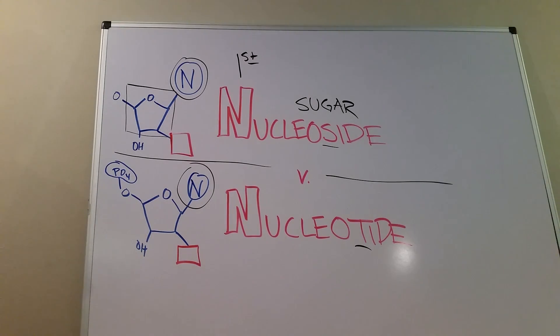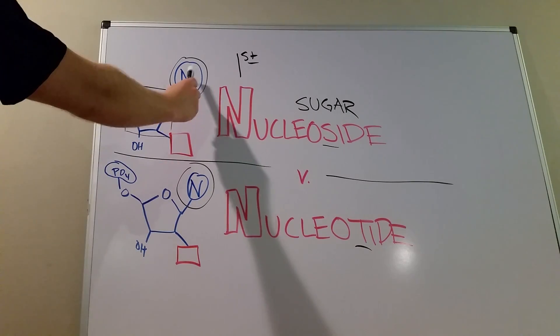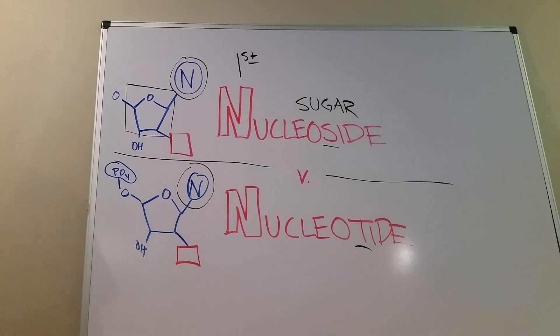And so basically a nucleoside, think S, sugar, we think of that because nucleoside has to do with the addition of this ribose here. So we start with the purine or pyrimidine, we add the ribose, now we get a nucleoside. Now, what the heck is a nucleotide?